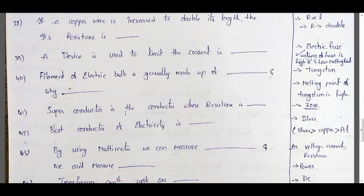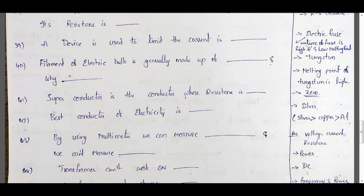A superconductor is a conductor whose resistance is zero, meaning it has very high conductivity. The best conductor of electricity is silver. Conductivity order: silver > copper > aluminum. Silver has the highest conductivity, but we use copper or aluminum because the cost of silver is very high.